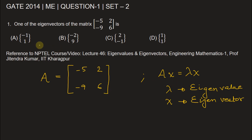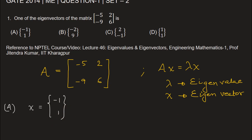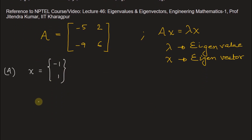One approach we can use here, because we have limited time in the exam, is to check all the options for eigenvectors directly. So let's say option A gives the eigenvector as [-1, 1]. Let's check if this is an eigenvector for this matrix.